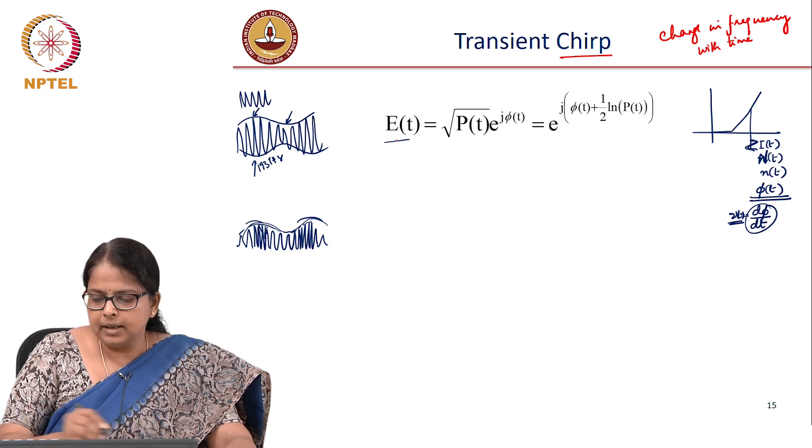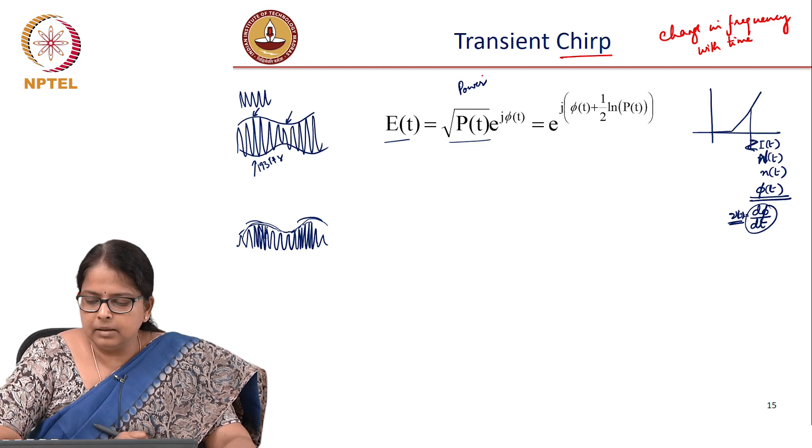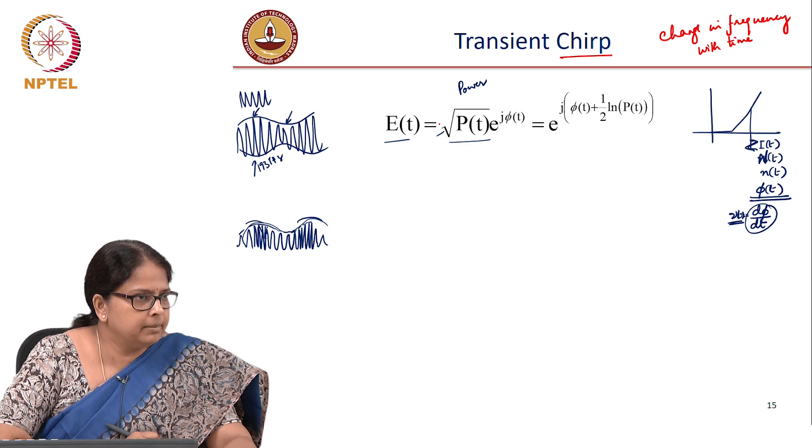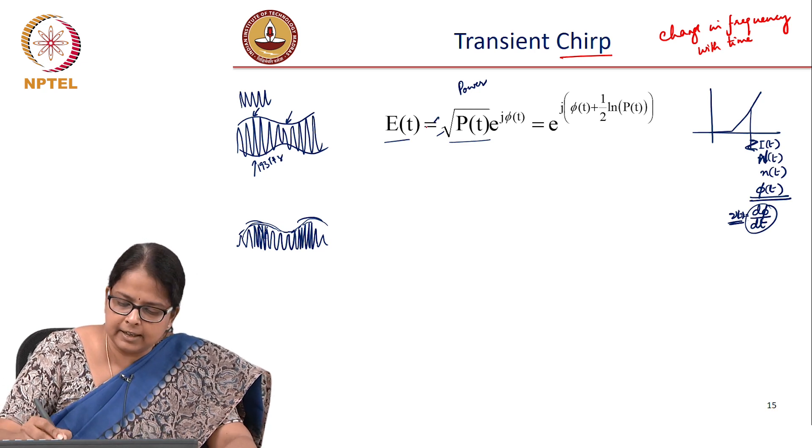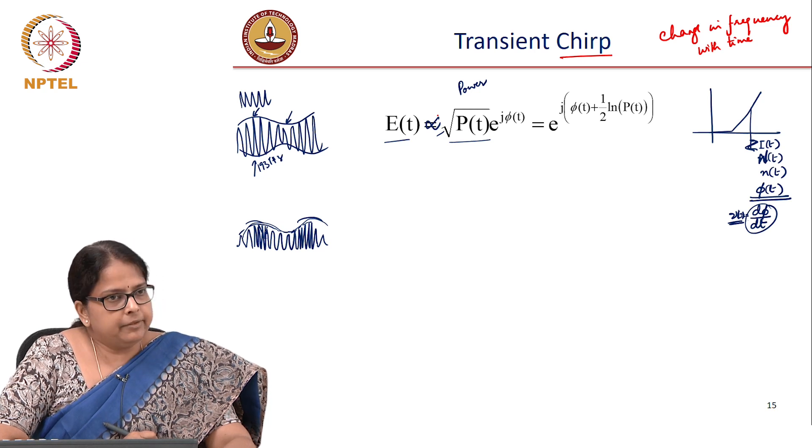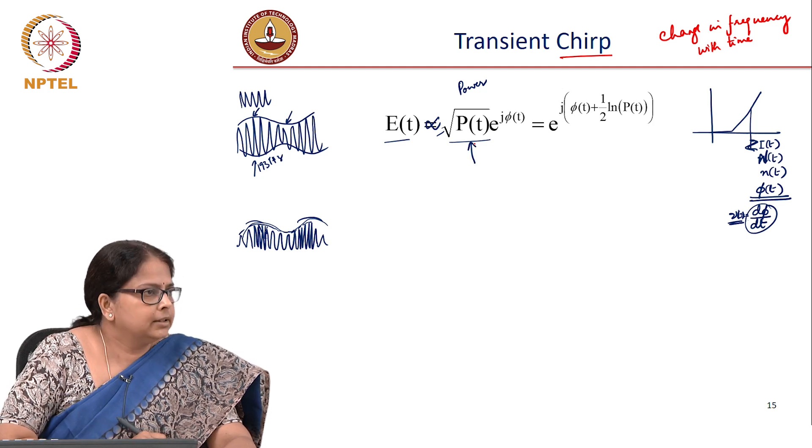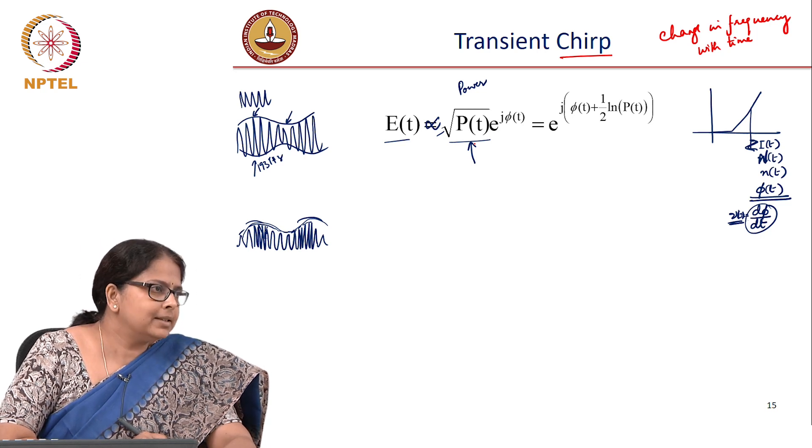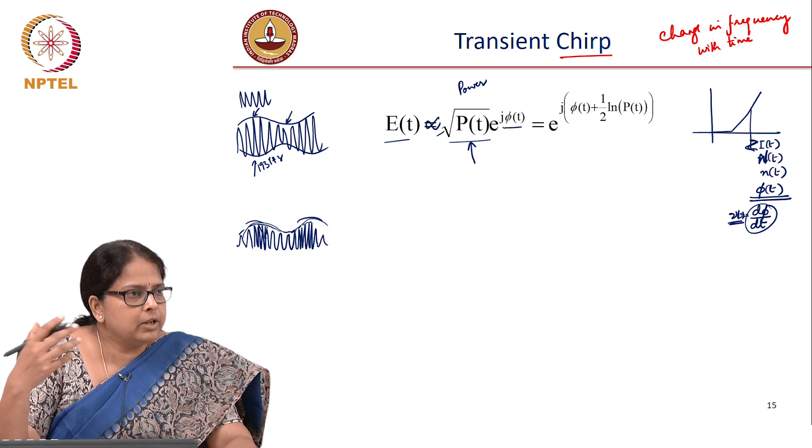Your electric field is square root of p power. Here p represents power, it is not photon number. There is a normalization factor, some area factor which is missing here, but let us say electric field is proportional to e power j phi t. What we are doing is modulation here. We are trying to do an intensity modulation, but what ends up happening is a phase modulation also.